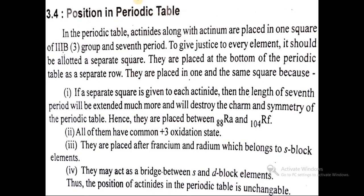Overall, regarding position in the periodic table: In the periodic table, actinides along with actinium are placed in one square of group 3B, group number 3, and seventh period. To give justice to every element, it should be allotted a separate square. They are placed at the bottom of the periodic table as a separate row.